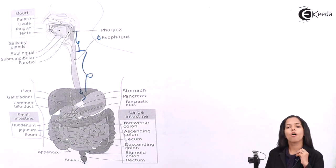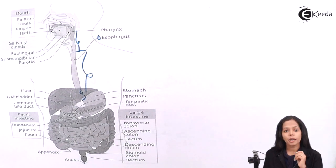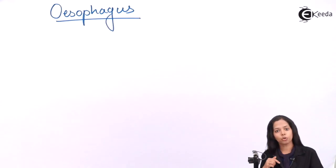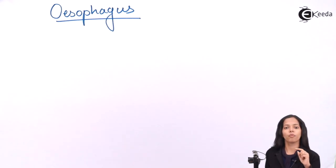Now what is the function of esophagus? The esophagus conducts food from mouth to stomach—I'm sorry, from pharynx to stomach, because food first enters the mouth, then it goes to pharynx, then esophagus, and then stomach. So this is the function of esophagus.